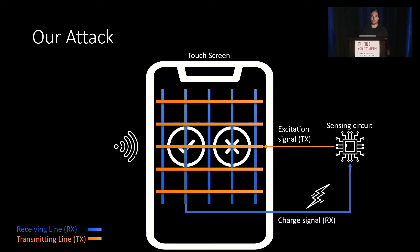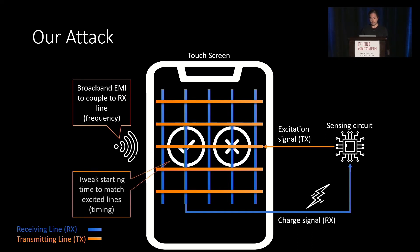So assume an attacker wants to press the OK button to a security critical task. He first has to generate a broadband EMI signal to couple to the RX line, because we don't know how long it is, we use a broadband one instead of a single frequency one. He has to tweak the starting time when he injects this EMI signal to match the exciting lines timing to not click somewhere else, but only on this button.